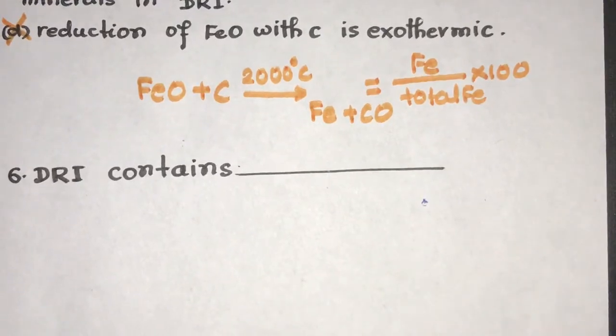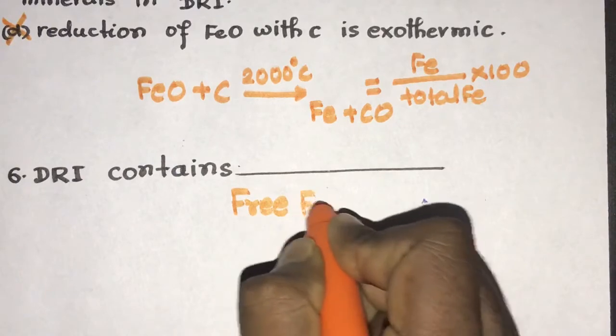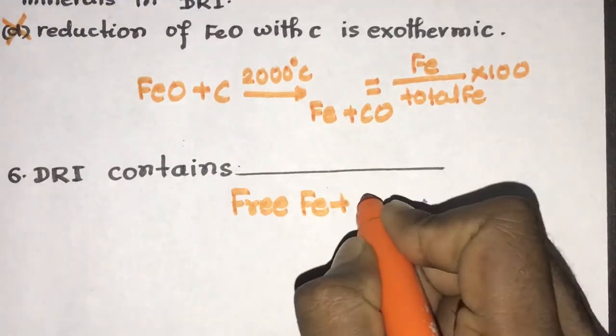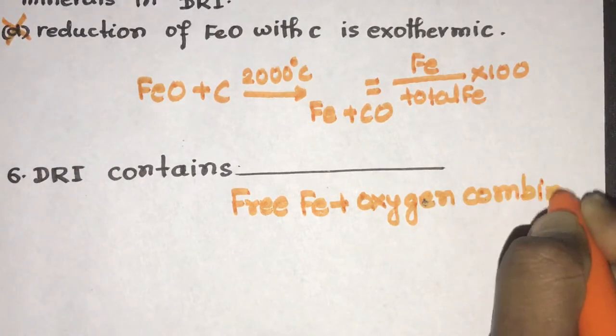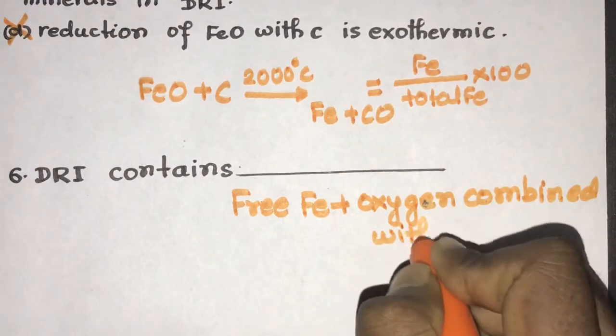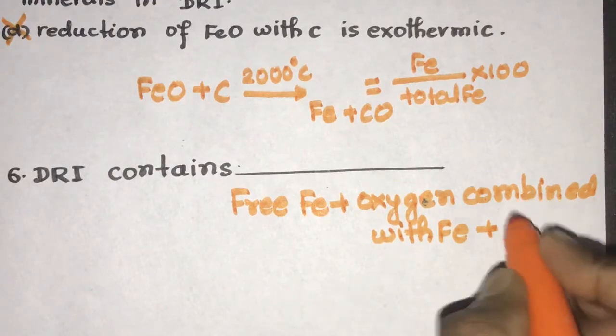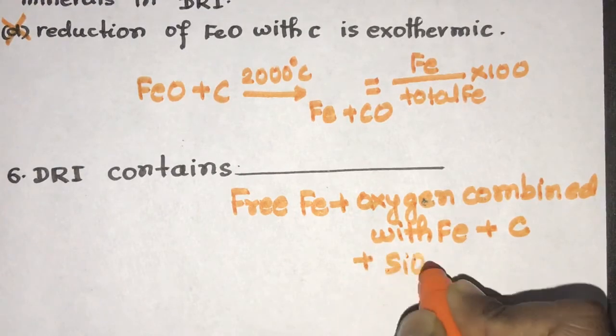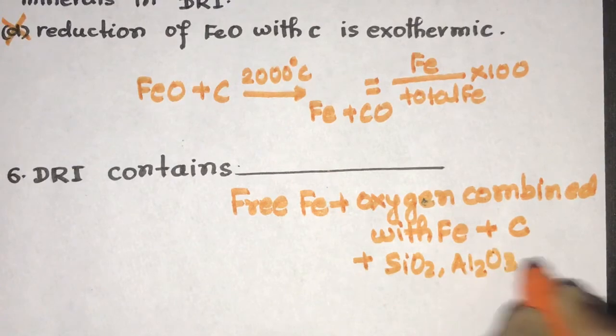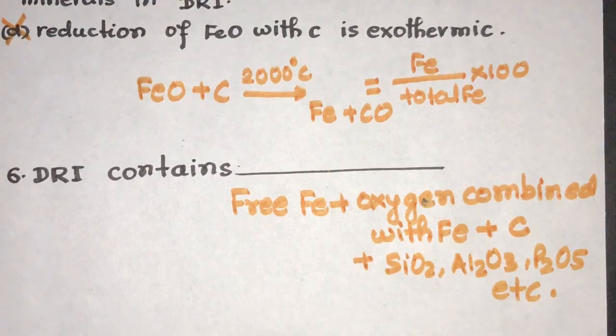Coming to the next. DRI contains - so what is the composition of DRI. So DRI contains mainly free iron, plus oxygen combined with iron, plus it has some free carbon also, and gang minerals like SiO2, Al2O3, and P2O5. These are the various composition of DRI.